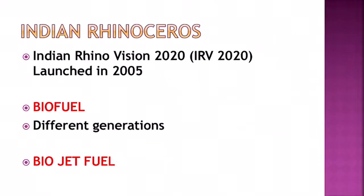Let us look into biofuel. Biofuel is a hydrocarbon fuel produced from organic matter in a short period of time. Usually hydrocarbons like petrol take millions of years to form through geological processes. First generation biofuel uses food crops like wheat and sugar for making ethanol, and oil seeds for biodiesel, by conventional fermentation methods.